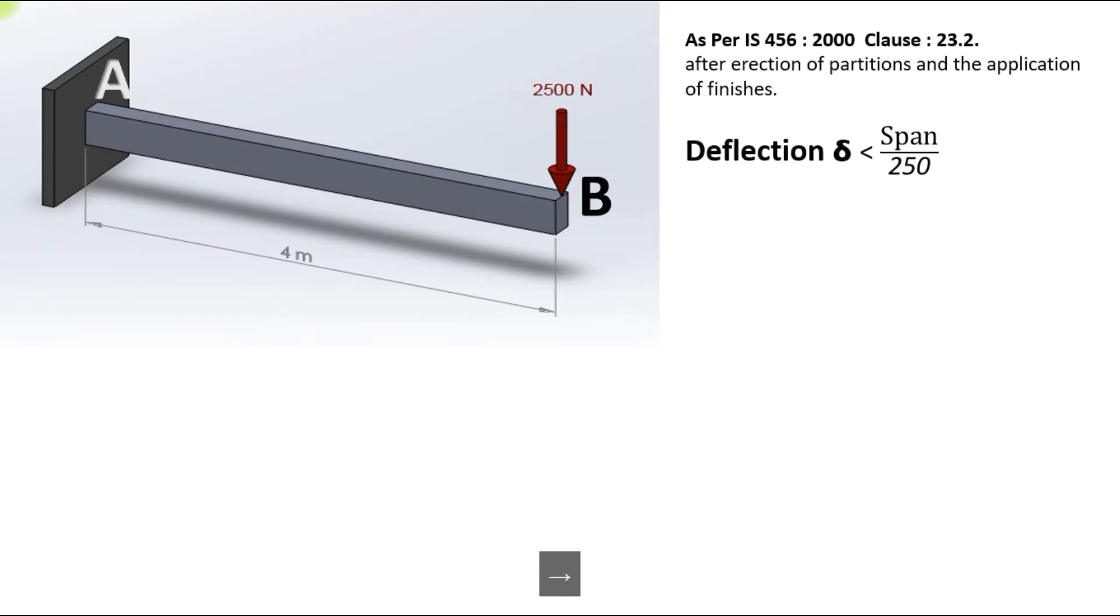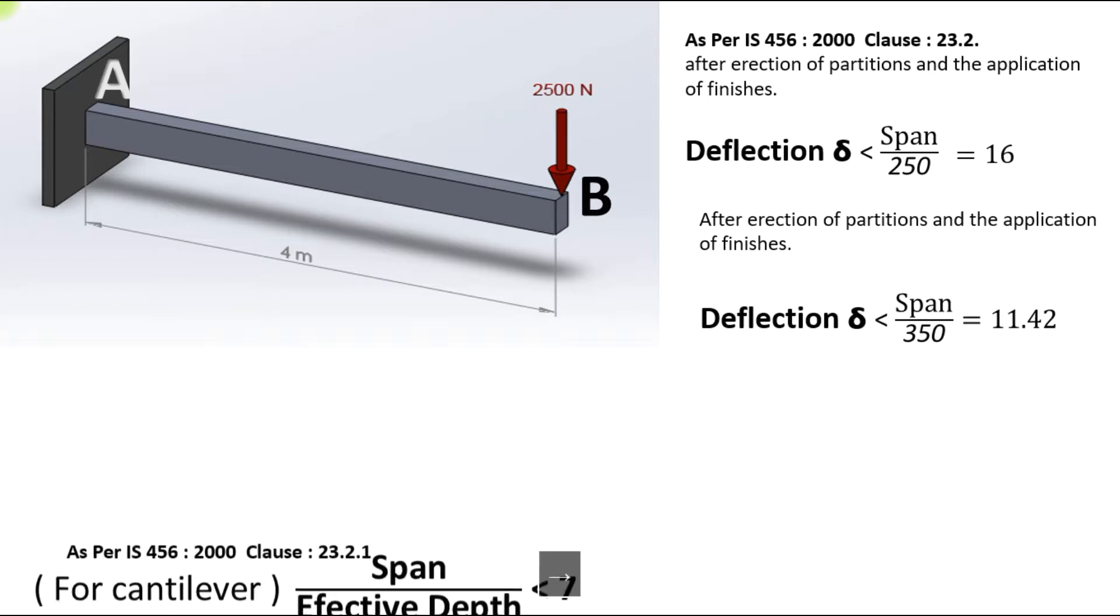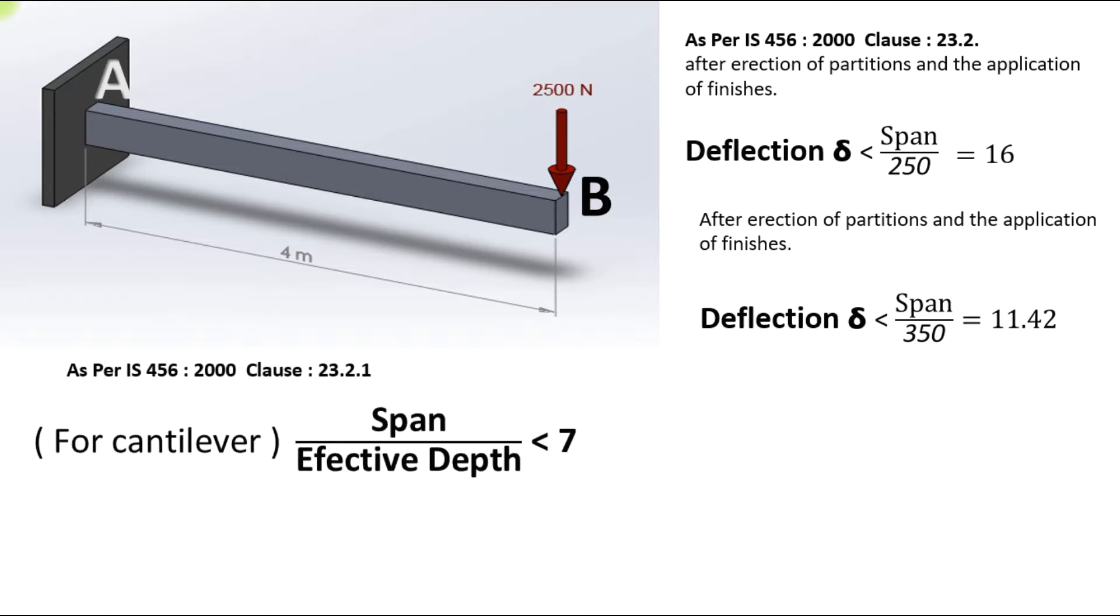As per clause IS 456:2000, the deflection will be less than span by 250, so our physical system is okay. After the erection, span by 350 is 11.42, so it's safe.